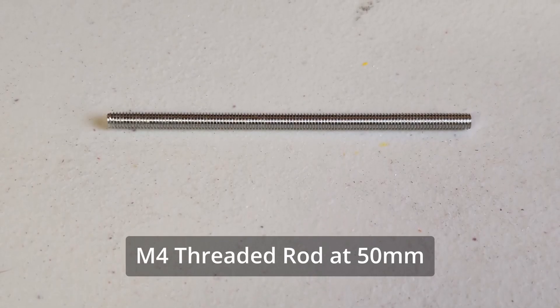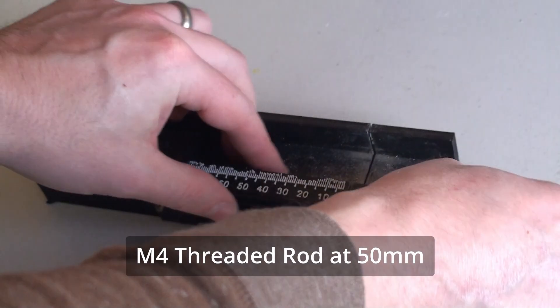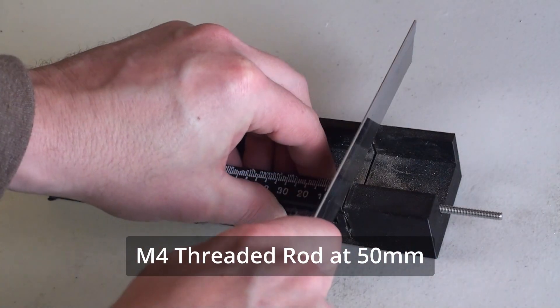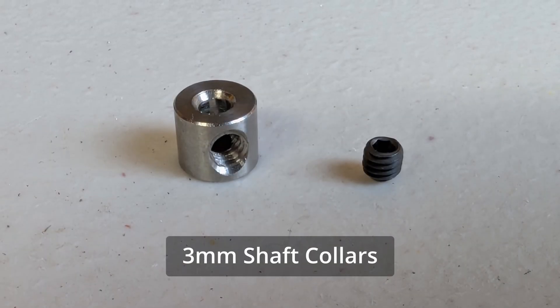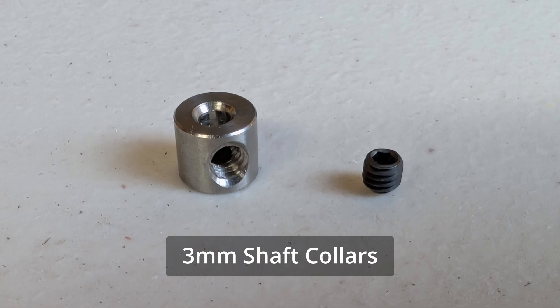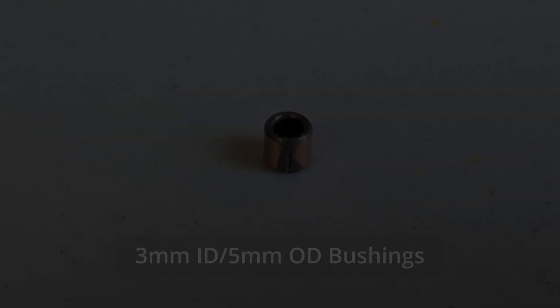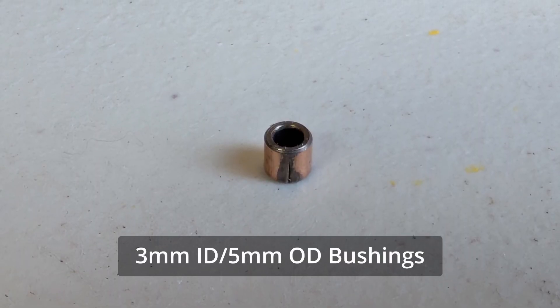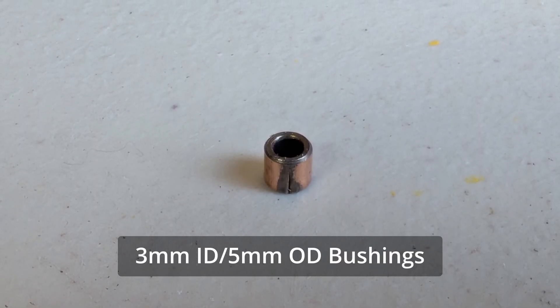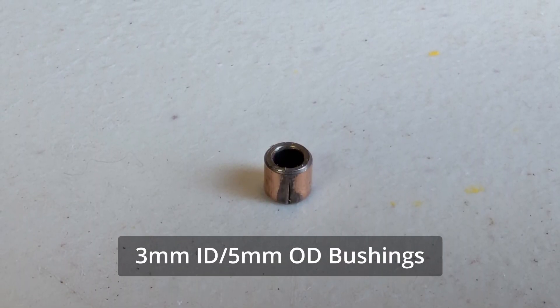You'll need 10 M5 machine bolts at around 12 millimeters in length. I went with countersink heads. You'll need 10 M5 knurled inserts that could be heated and pressed into your clock. You're going to need at least 5 M4 bolts at around 12 millimeters in length and 5 M4 knurled inserts.